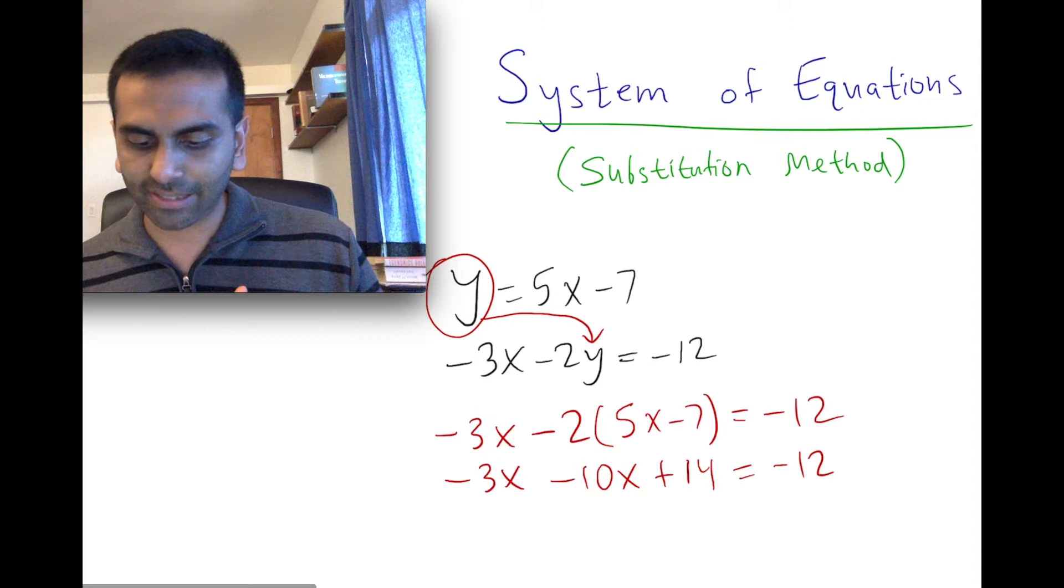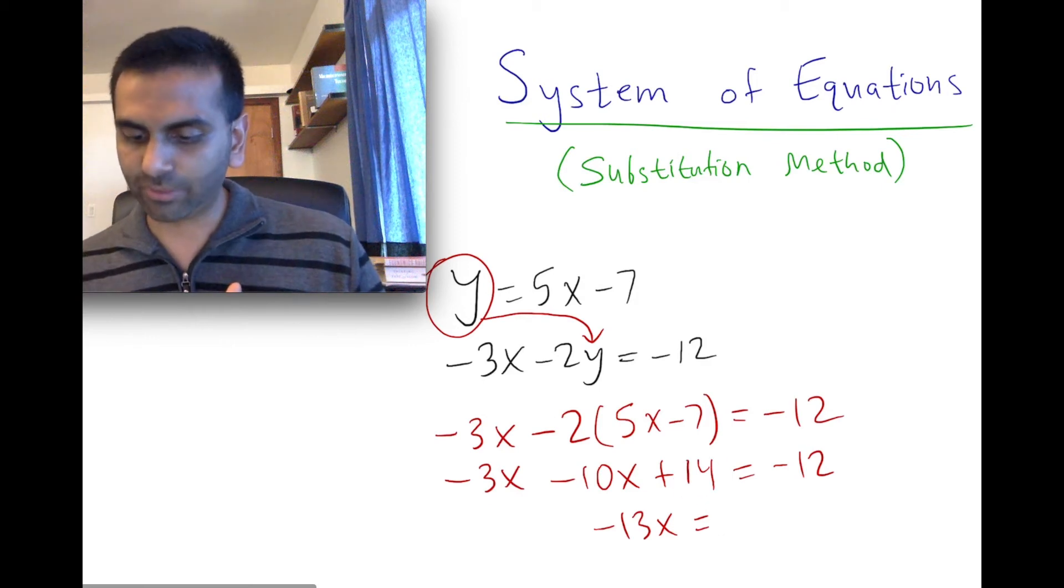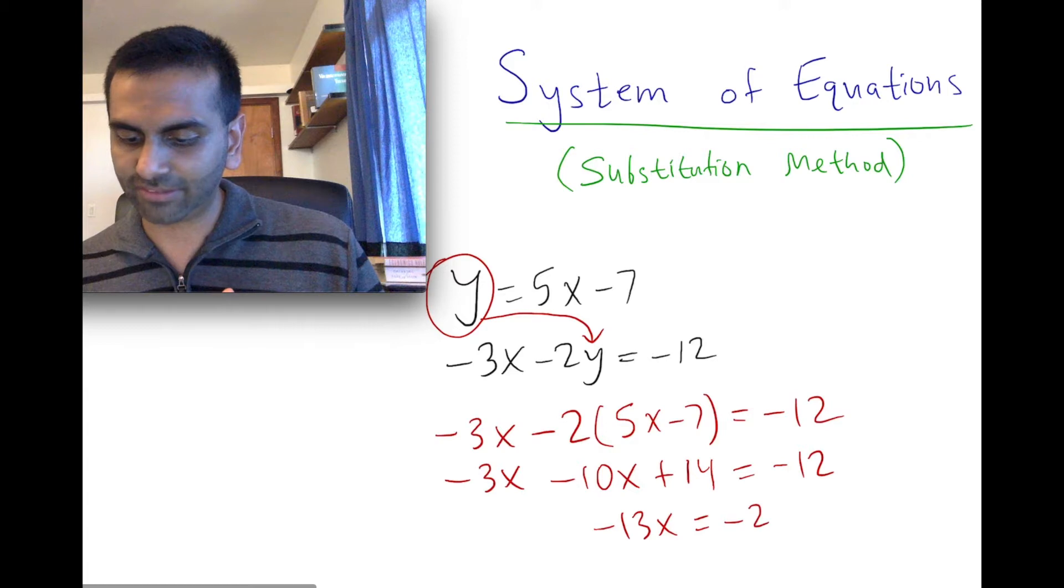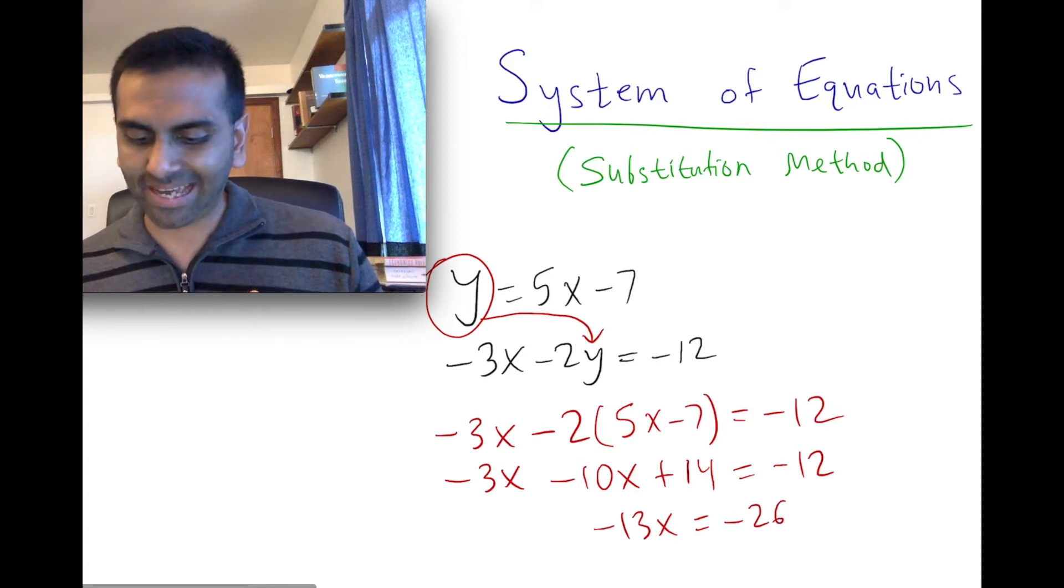And here we can combine like terms. -3 minus another 10 is -13x equals, if you subtract 14, -12 minus 14 is -26. Divide both sides by -13, x is going to equal positive 2.